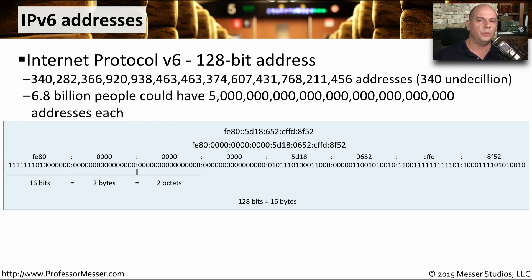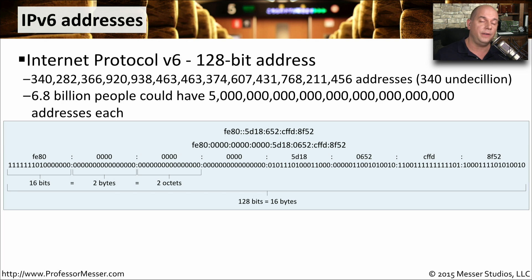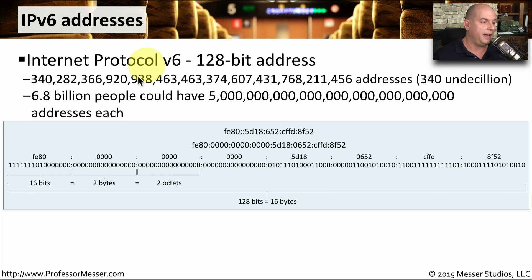In the world of networking, we skipped IP version 5 — it was allocated for another use. So we ended up using IP version 6, Internet Protocol version 6. Instead of a 32-bit address like IPv4, an IPv6 address is 128 bits in length. This means we can have a very large address space for IPv6 — up to 340 undecillion addresses.